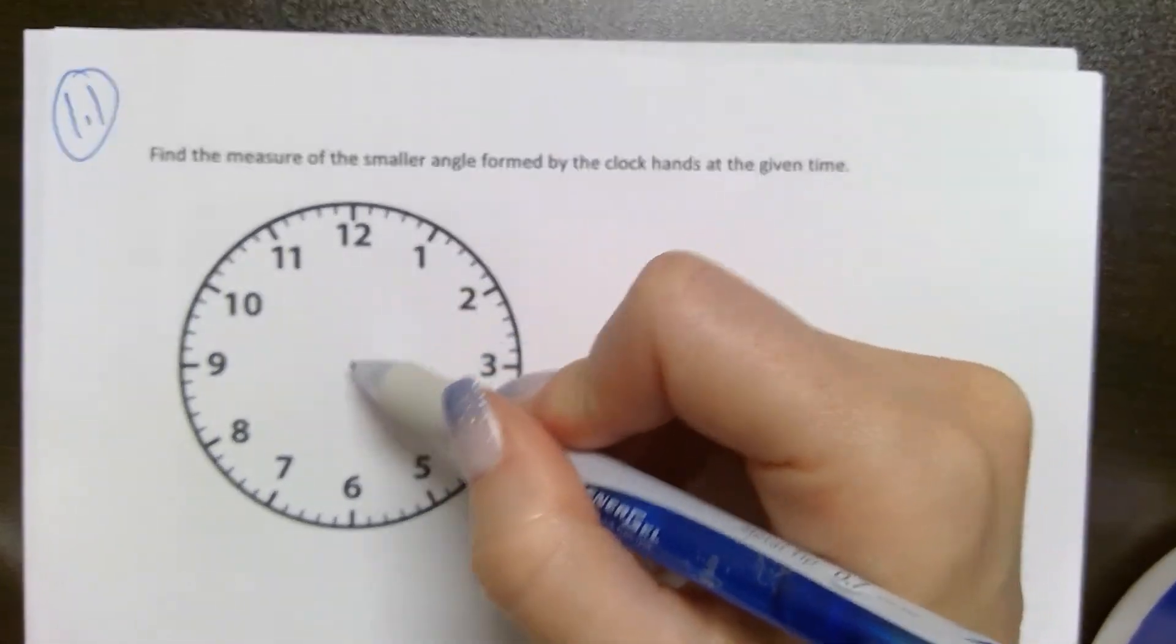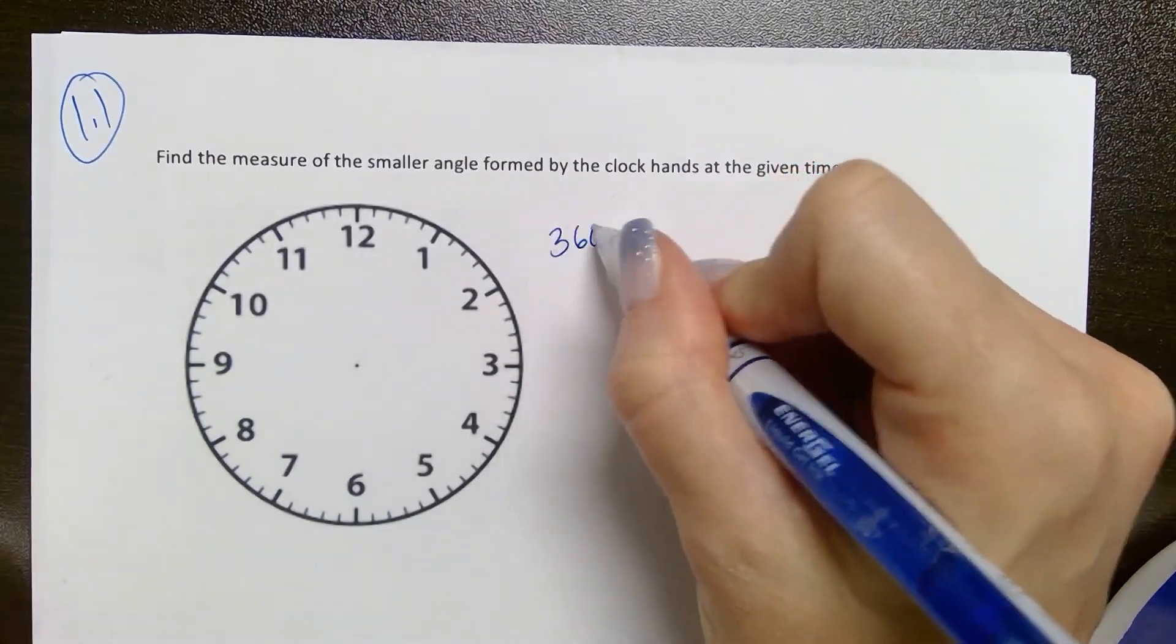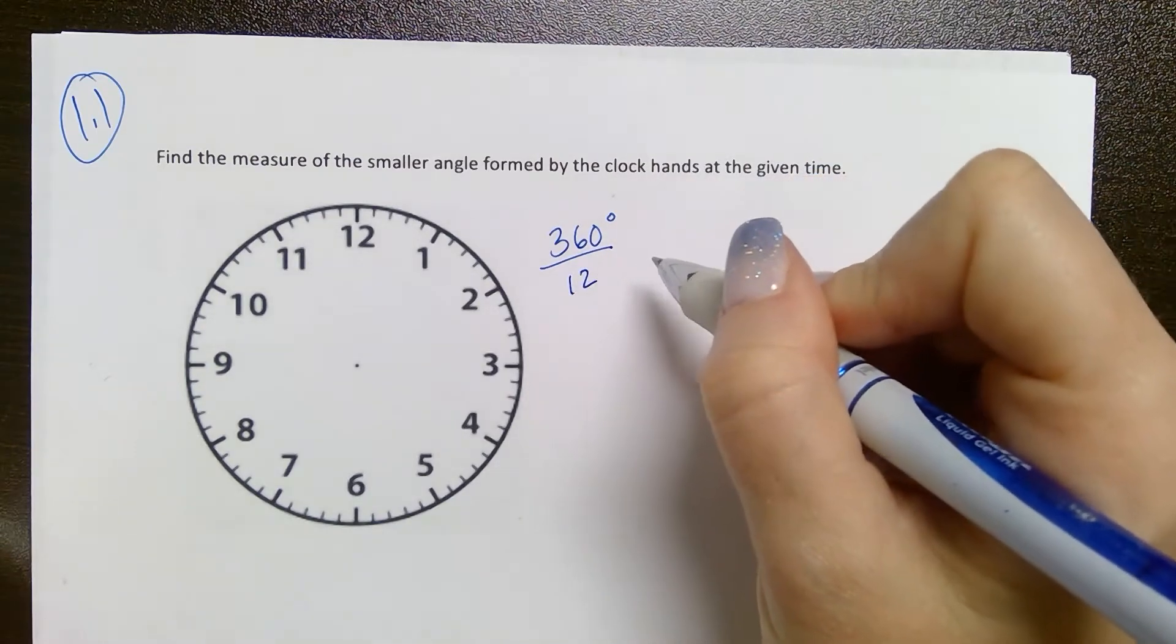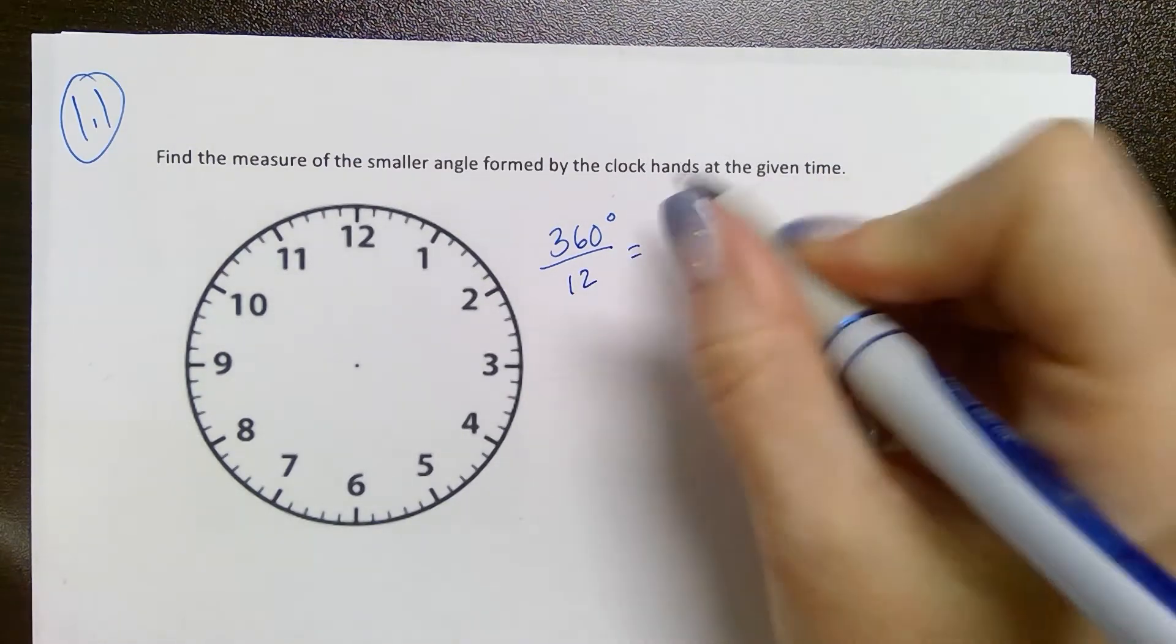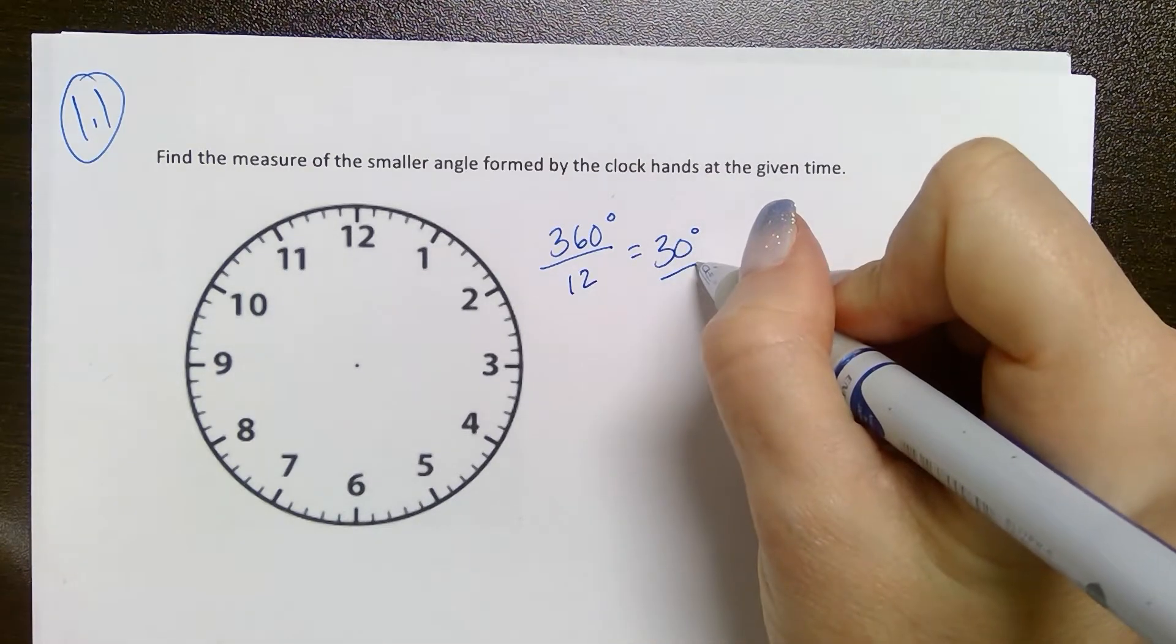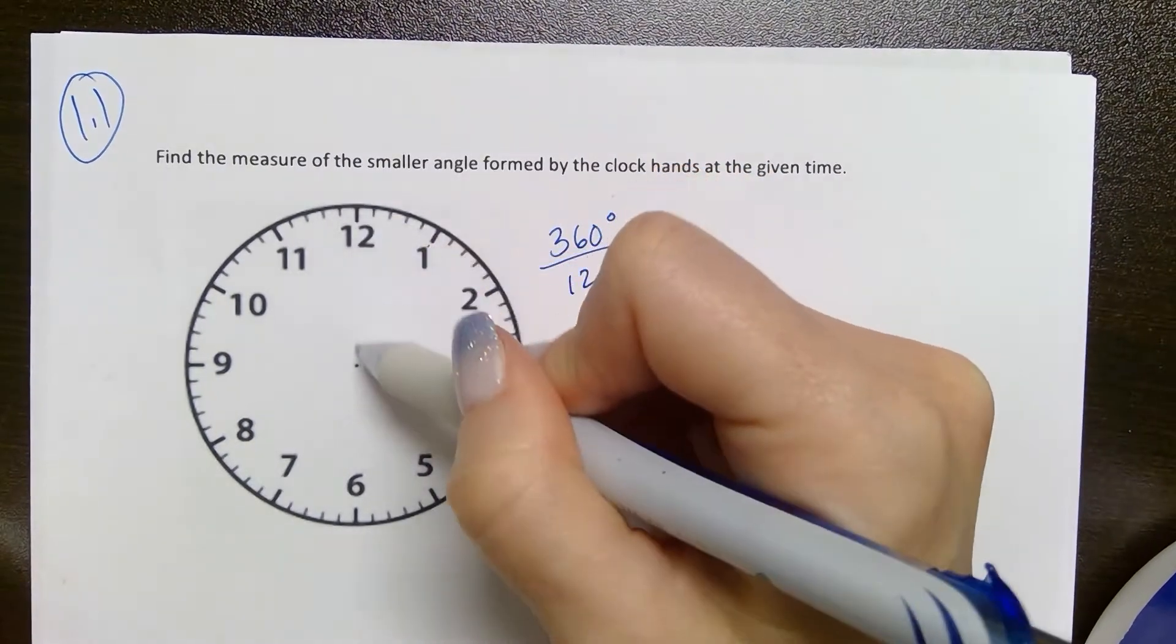The angle between the 1 and the 2 is a twelfth of the rotation, and so on. So if I consider my 360 degree rotation divided into 12 equal central angles, I see that I have a 30 degree angle for each of those,